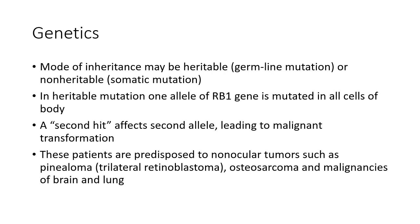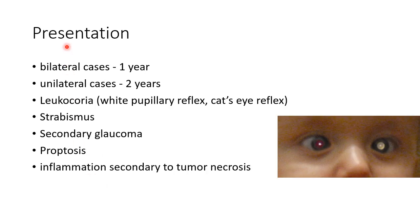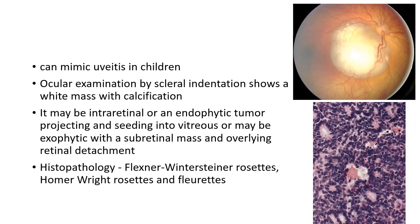Let us see about the presentation of retinoblastoma. Bilateral cases usually present around one year of age; unilateral cases present around two years of age. The signs and symptoms include leukocoria, that is white pupillary reflex or cat's eye reflex. This picture shows a patient with leukocoria. Other signs and symptoms include strabismus, secondary glaucoma, proptosis, and inflammation secondary to tumor necrosis. Retinoblastoma can mimic uveitis in children.